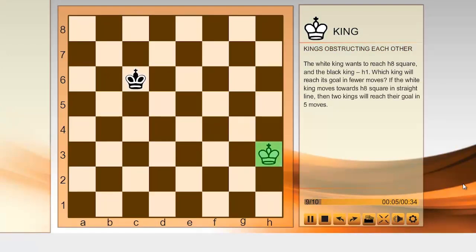Kings obstructing each other. The white king wants to reach h8 square and the black king h1. Which king will reach its goal in fewer moves?